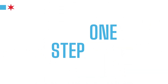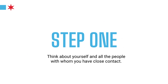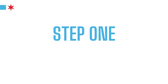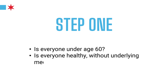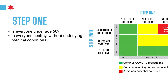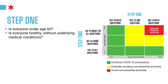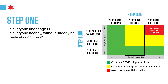Step one: think about yourself and all the people with whom you have close contact. Is everyone under age 60? Is everyone healthy without underlying medical conditions? If the answer is yes to both of these questions, you're in a lower risk category for a severe outcome. If the answer is yes to one of those questions, you're in a moderate risk. And if the answer is no to both of those questions, you're in a higher risk for severe outcome.